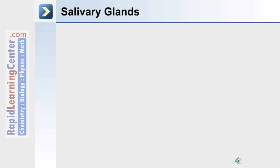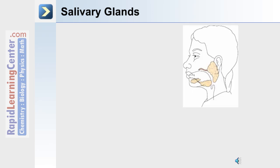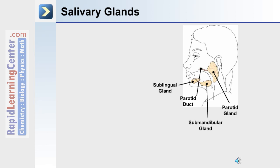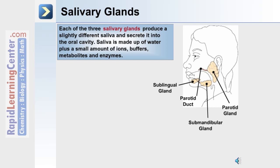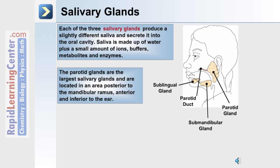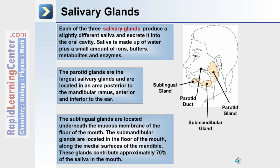Also in the oral cavity are the salivary glands. The anatomical locations include the sublingual gland, the submandibular gland, the parotid gland, and the associated parotid duct. Each of the three salivary glands produce a slightly different type of saliva. Saliva is made up of water plus a small amount of ions, buffers, metabolites, and an enzyme. The parotid glands are the largest salivary glands, located posterior to the mandibular ramus and anterior and inferior to the ear. The sublingual glands are located underneath the mucous membrane of the floor of the mouth. The submandibular glands are located in the floor of the mouth along the medial surfaces of the mandible bone, and these glands contribute approximately 70% of the saliva in the mouth.